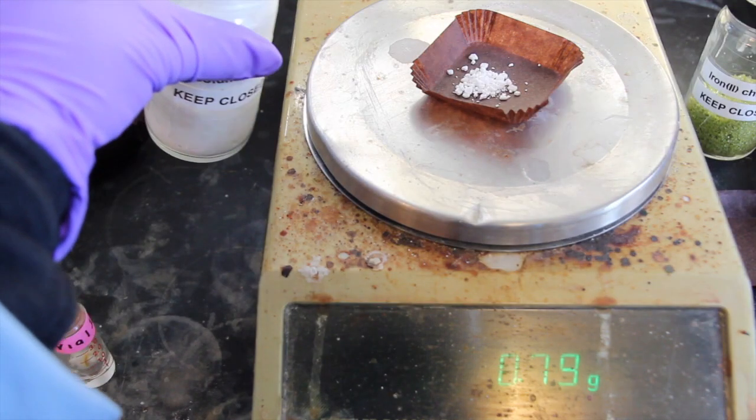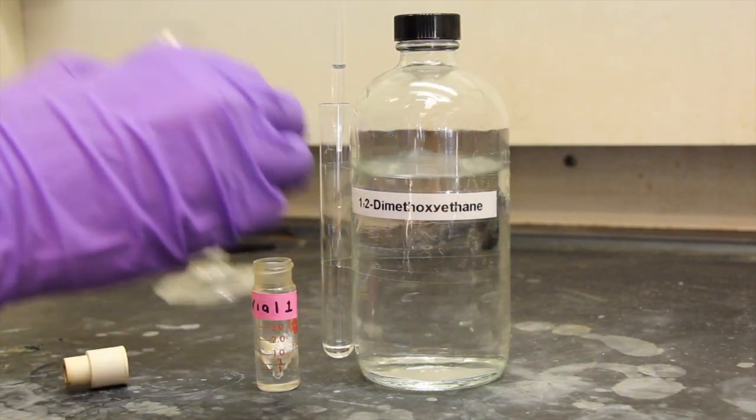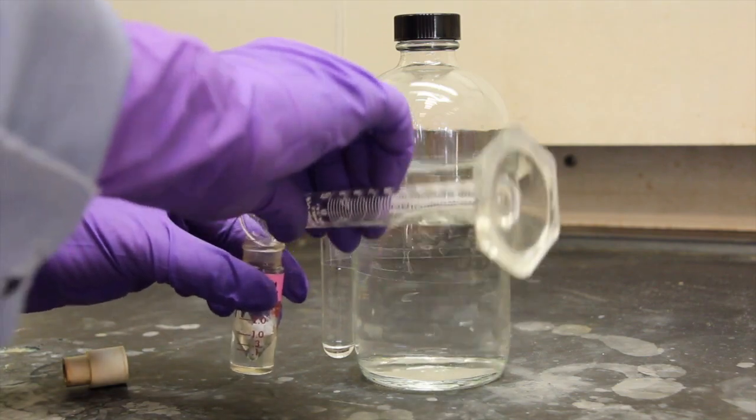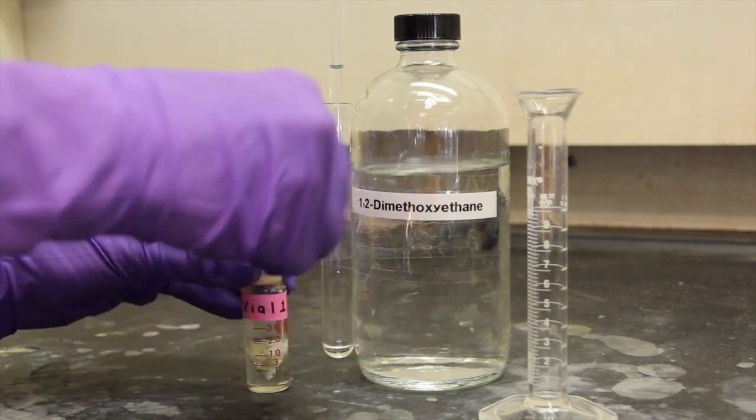Begin by placing 0.75 grams of finely ground potassium hydroxide and 1.25 milliliters of dimethoxyethane into a 5 milliliter reaction vial equipped with a spin vane. Quickly cap the vial with a rubber septum.